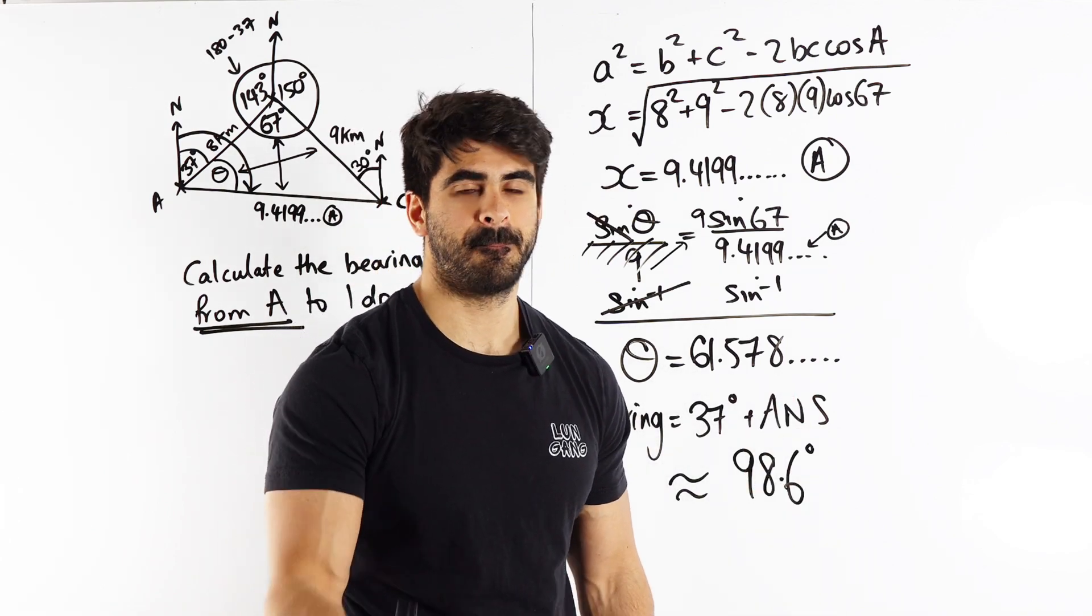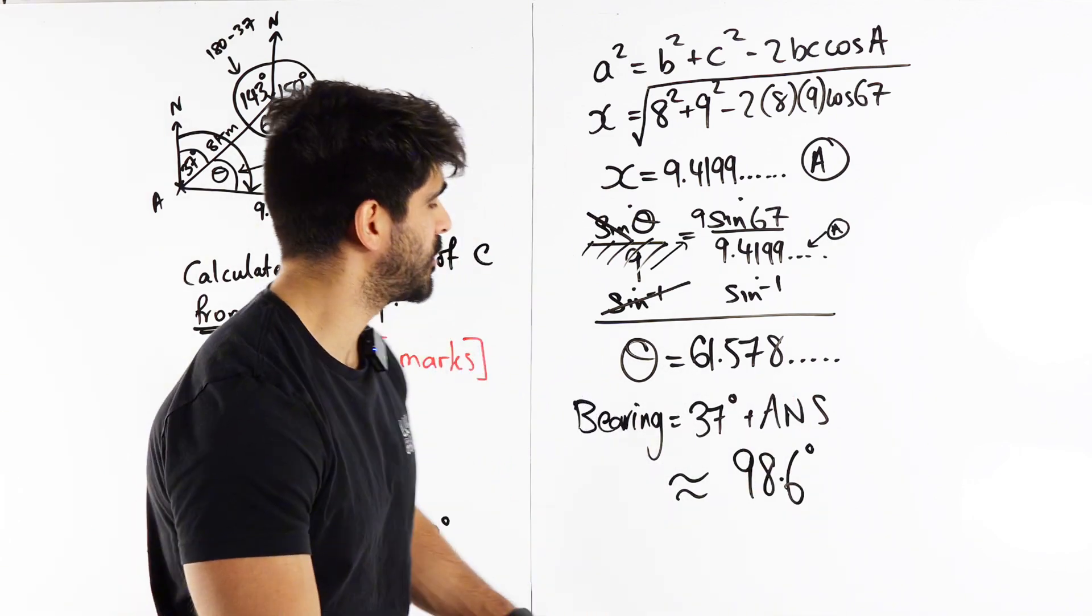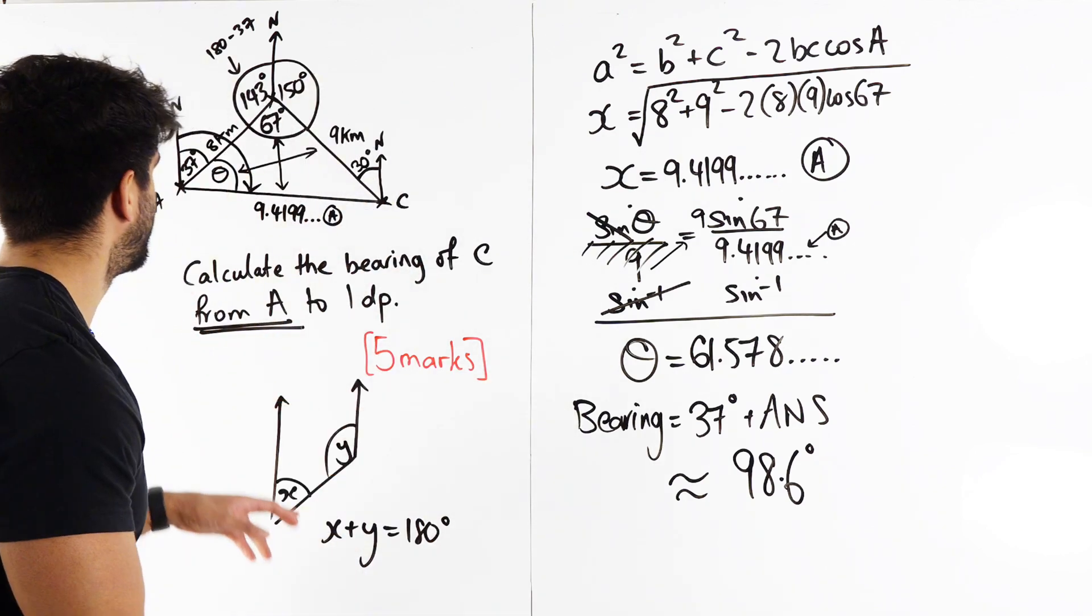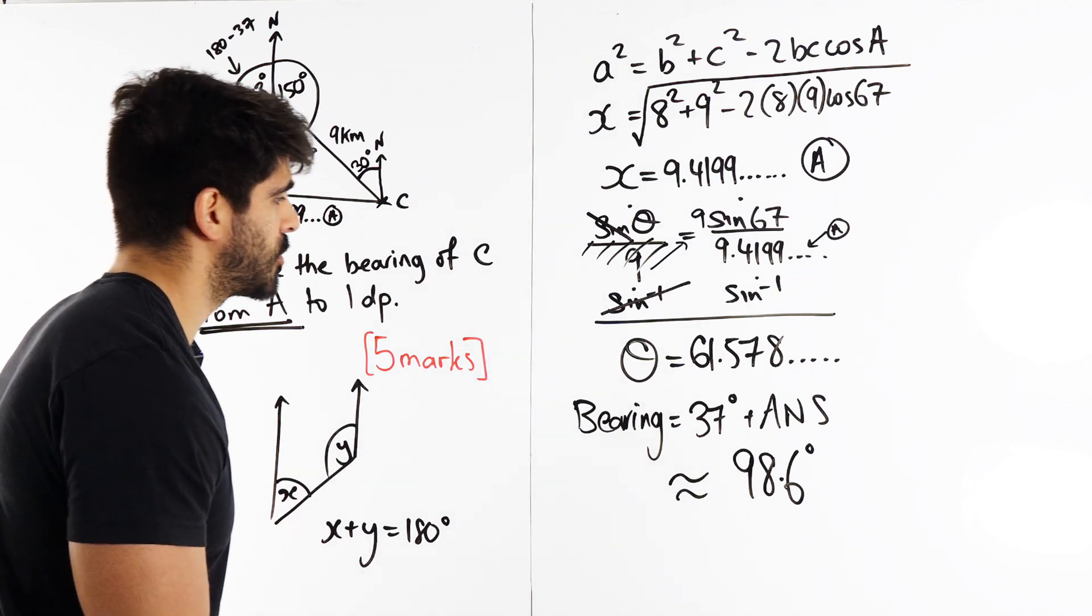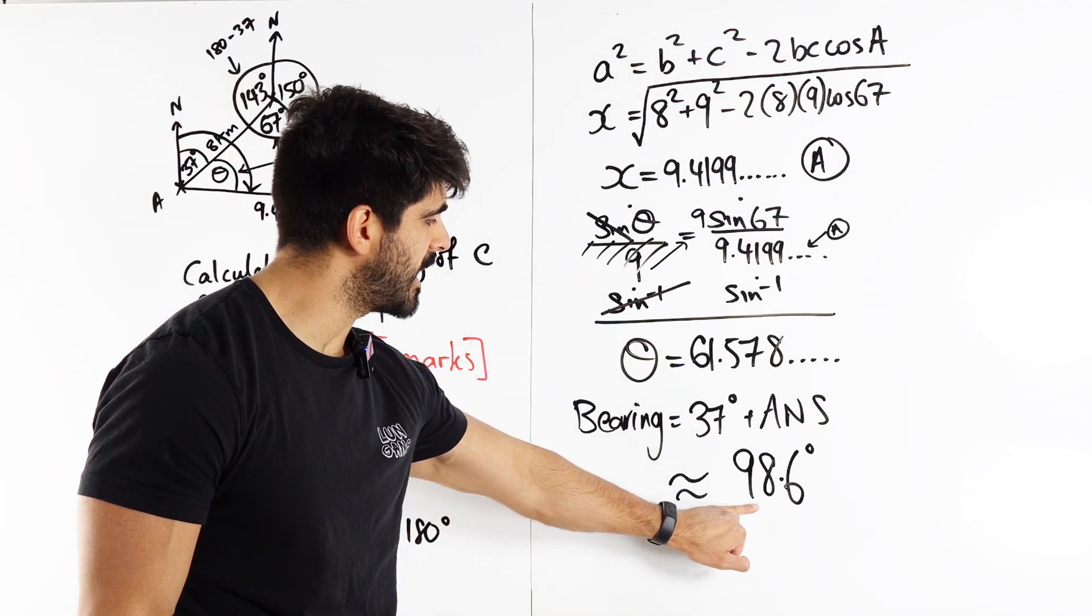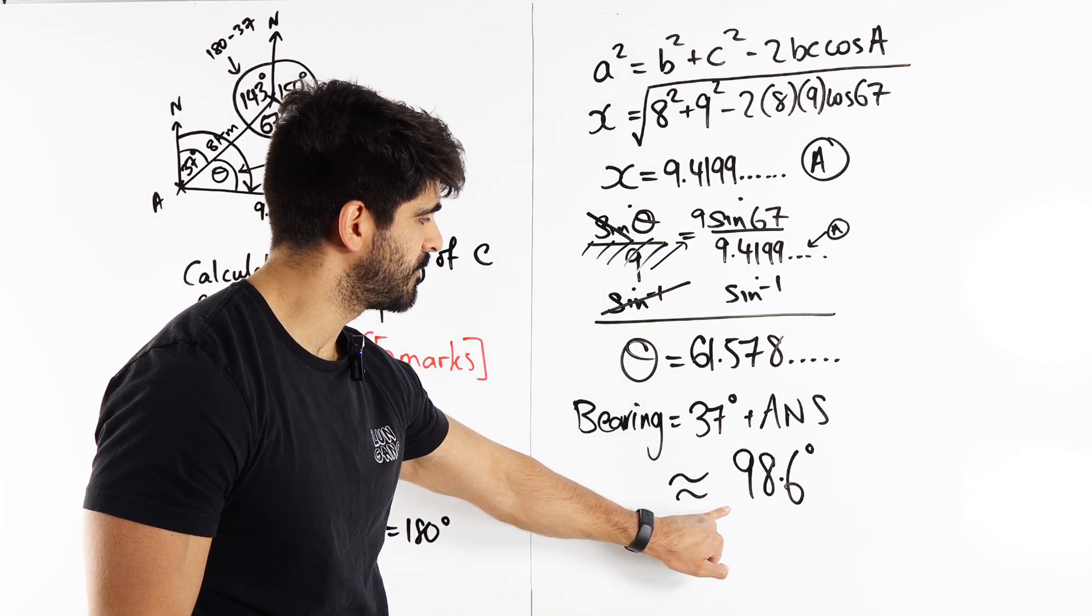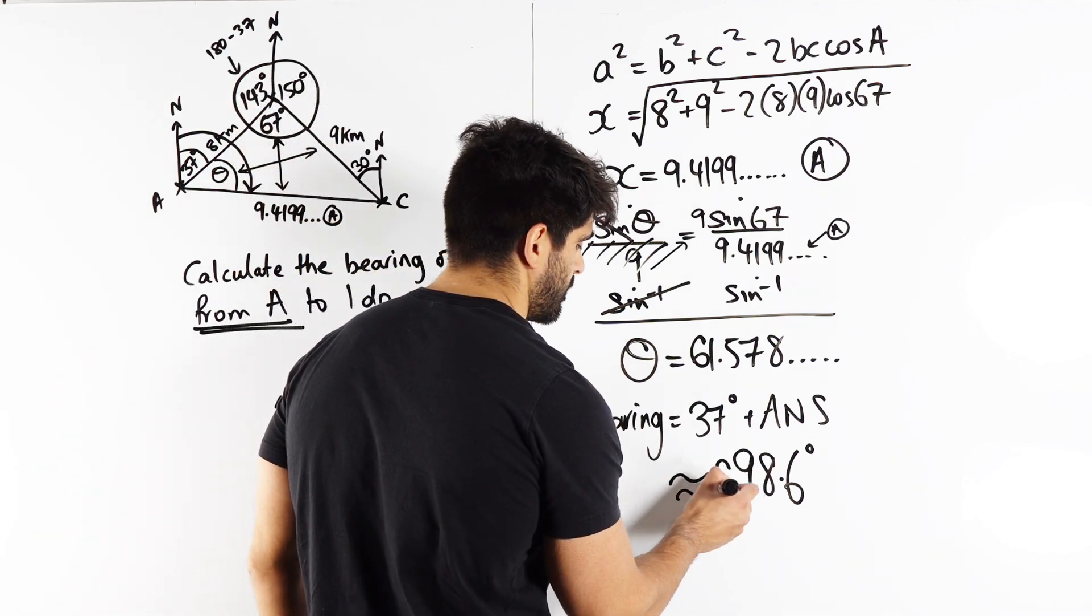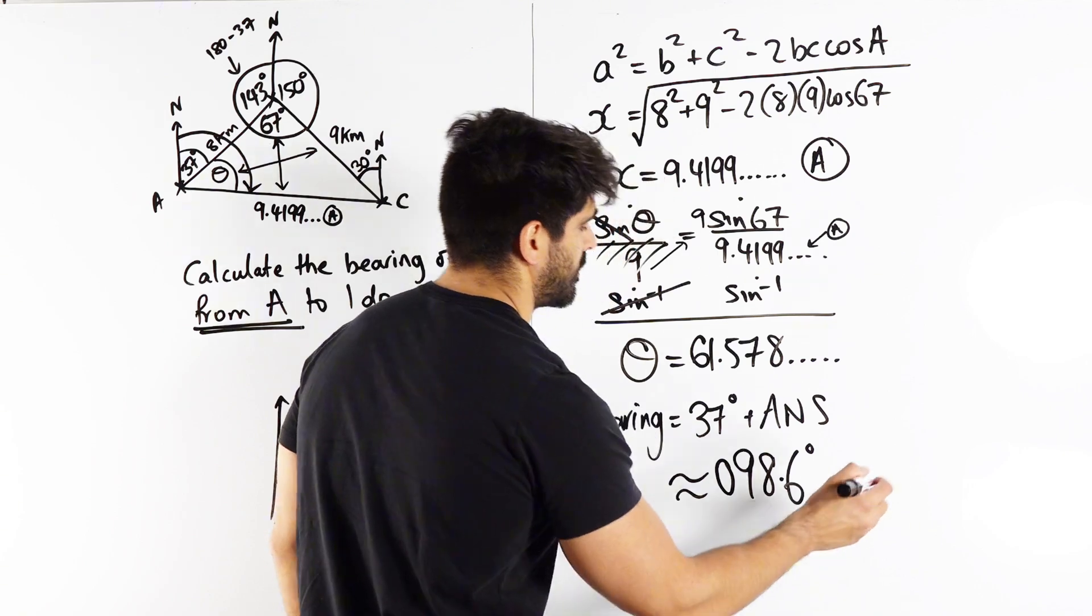Happy with that? No. There's a lot of things, guys, that we need to consider in this question. It's a really tough question. Bearing is three digits to the left of the decimal place. So, 98, not good enough. We actually need to include a 0 here. And that is our final answer.